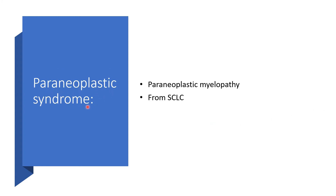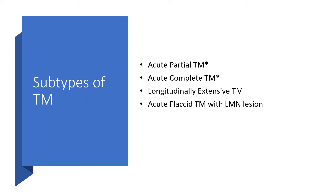Paraneoplastic syndrome can lead to transverse myelitis — in that case, there will be paraneoplastic myelopathy from small cell lung cancer. Subtypes of transverse myelitis include acute partial transverse myelitis, acute complete transverse myelitis, longitudinally extensive transverse myelitis, and acute flaccid transverse myelitis with lower motor neuron lesion.